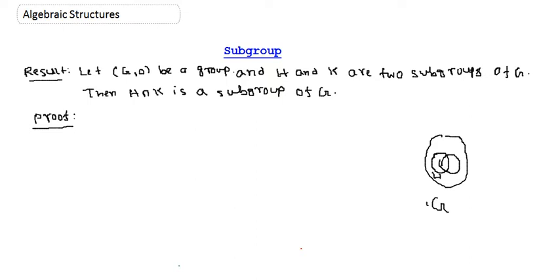H is a subgroup of G and K is another subgroup of G. Because subgroups are subsets, we can talk about the intersection of these two subsets. We get another subset, H intersection K. The question is: does H intersection K form another subgroup of G? The theorem says yes — H intersection K is a subgroup of G.